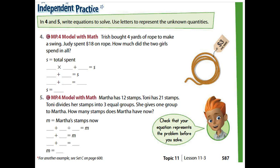For question five, Martha was already having twelve, and Tony had twenty-one stems which he divided into three equal groups. So we divide twenty-one by three — which equals seven — and then add seven to twelve. Looking at the answers: twelve plus twenty-one divided by three equals twelve plus seven, so Martha now has nineteen stems.